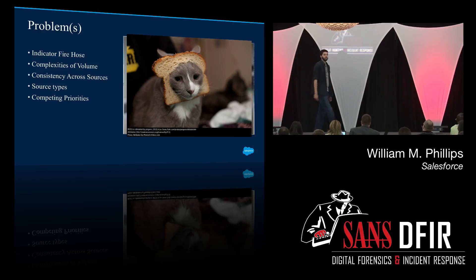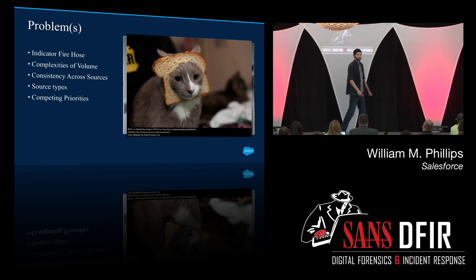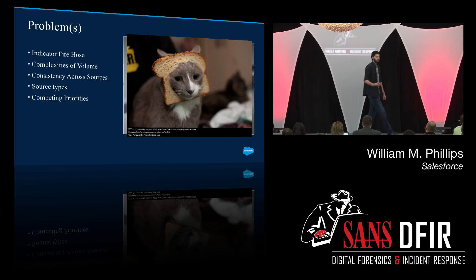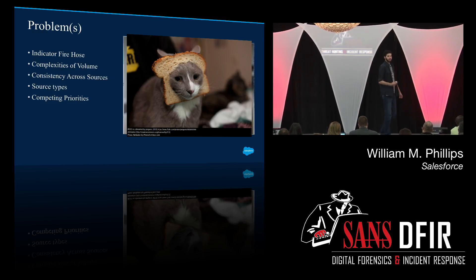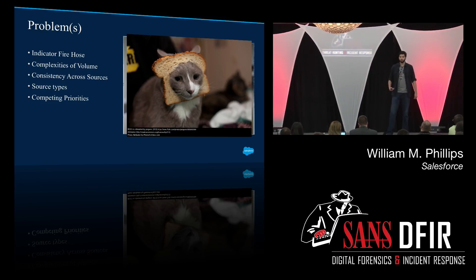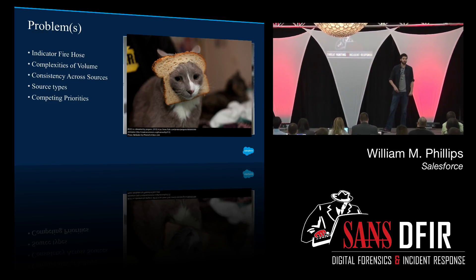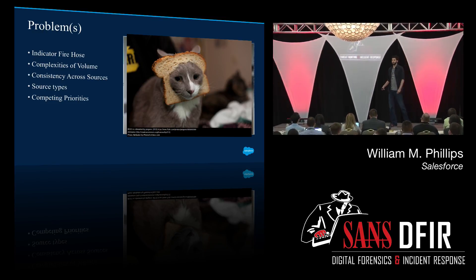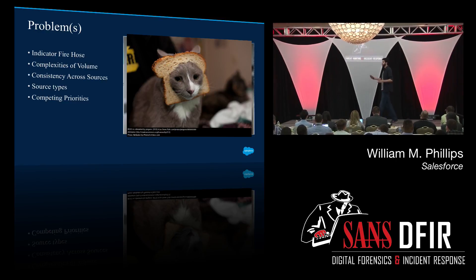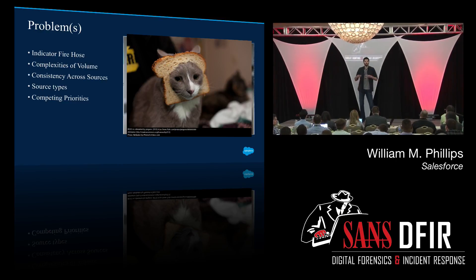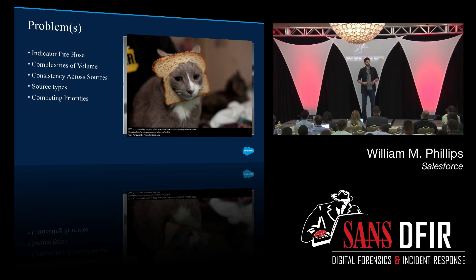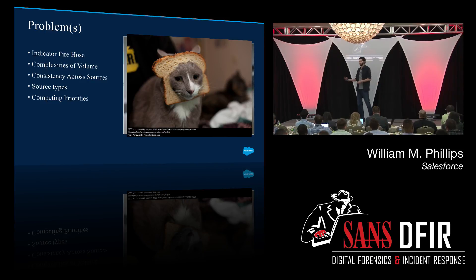And then competing priorities. One of the problems with being on the Threat Intel team is that whenever there's an incident, it gets escalated to you. You have to help out when there's an actual fire. You can't just sit there going through all the feeds, analyzing them, trying to figure out what's good and what's bad — that's not a good use of your time. You have to go and fight the fires.